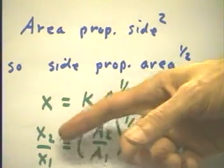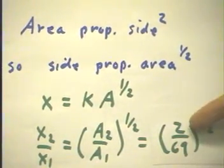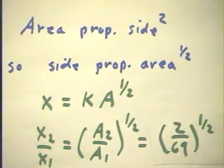In any case, the ratio of the sides then will be the square root of the ratio of the areas. The area ratio is 2 over 69 and we can take that to the one-half power and get a number.